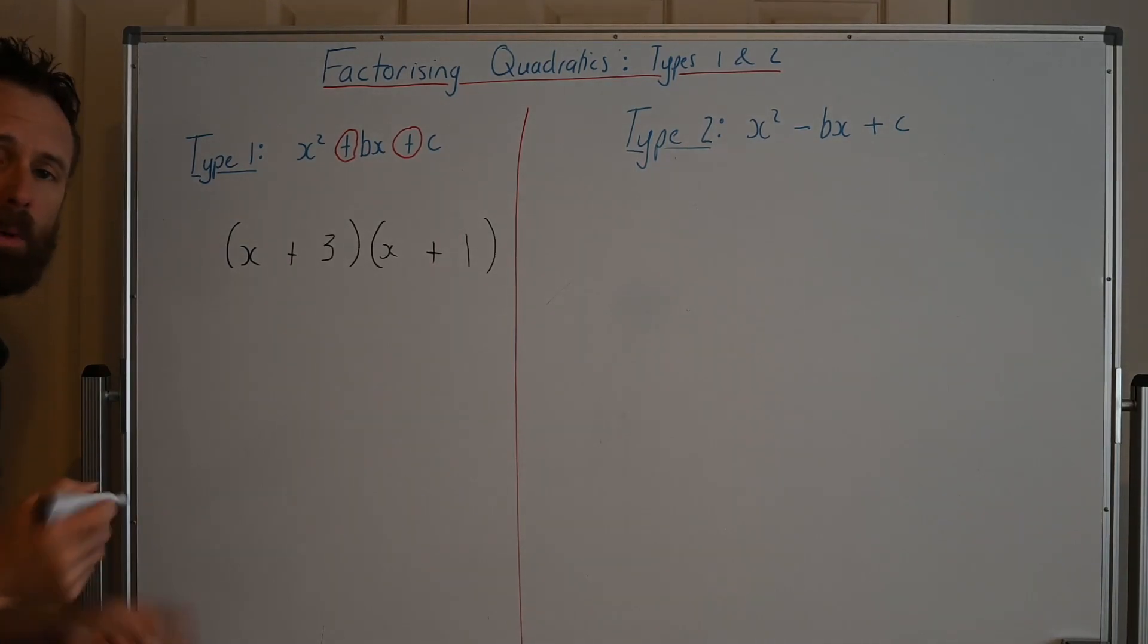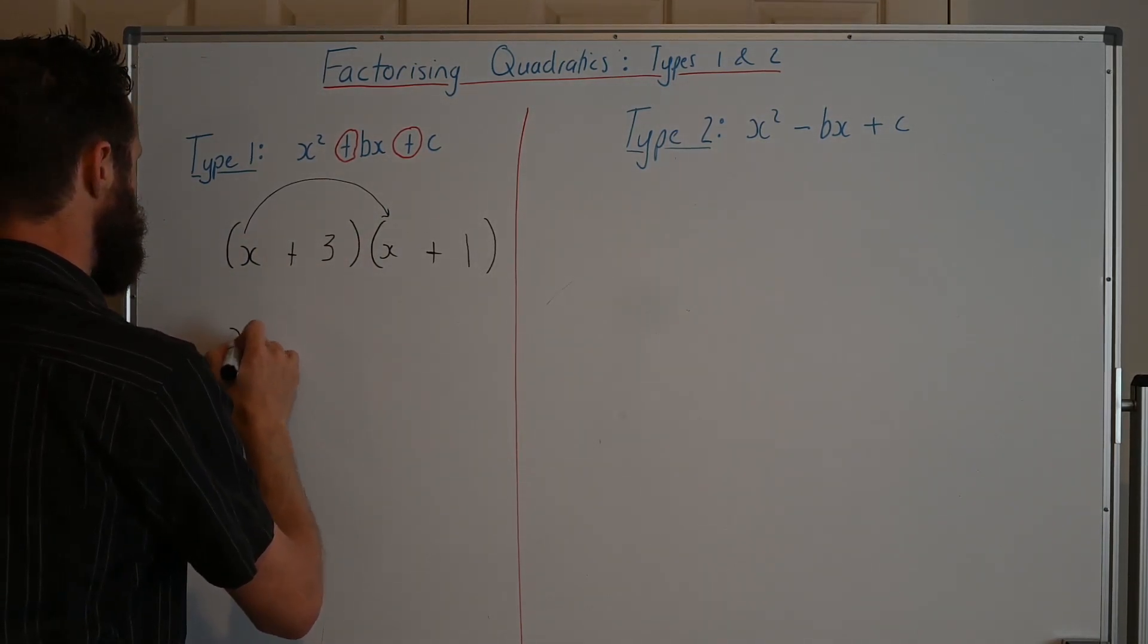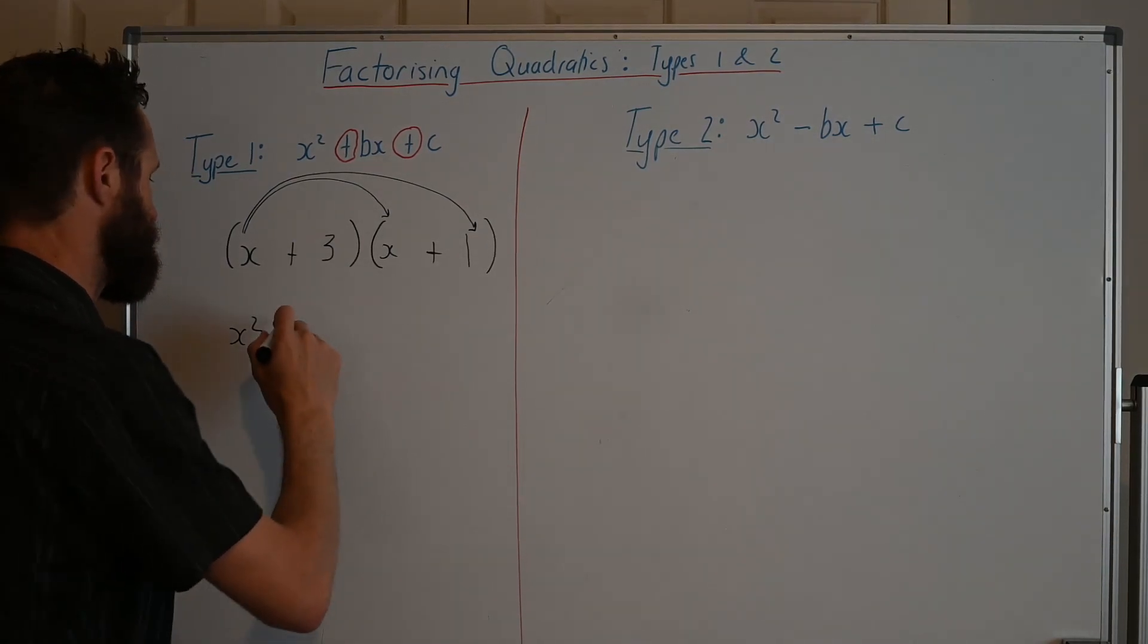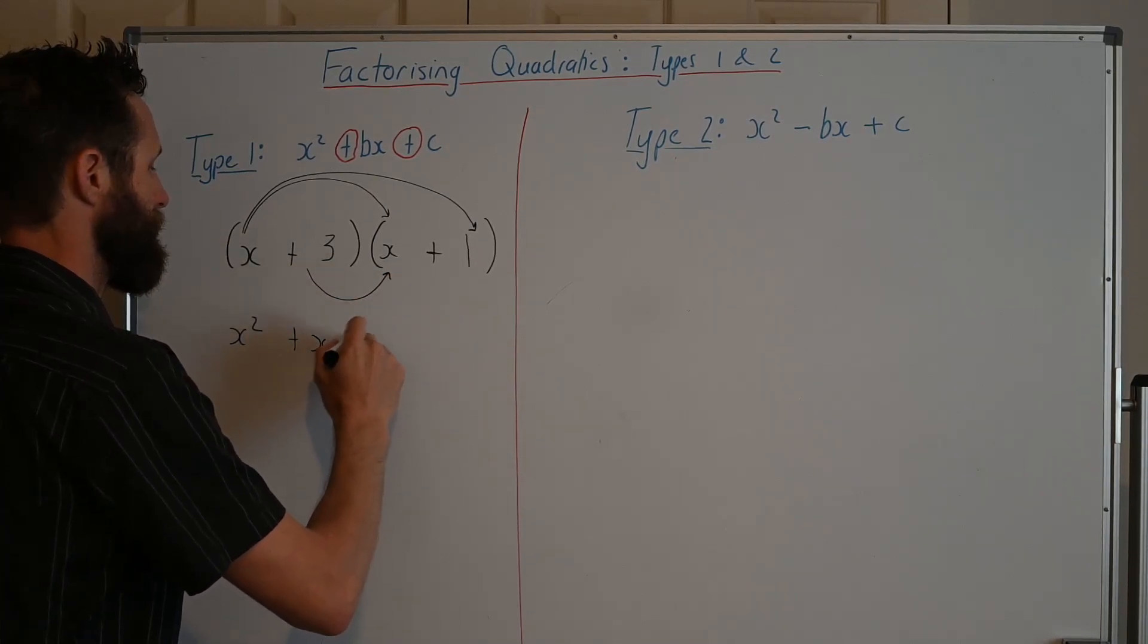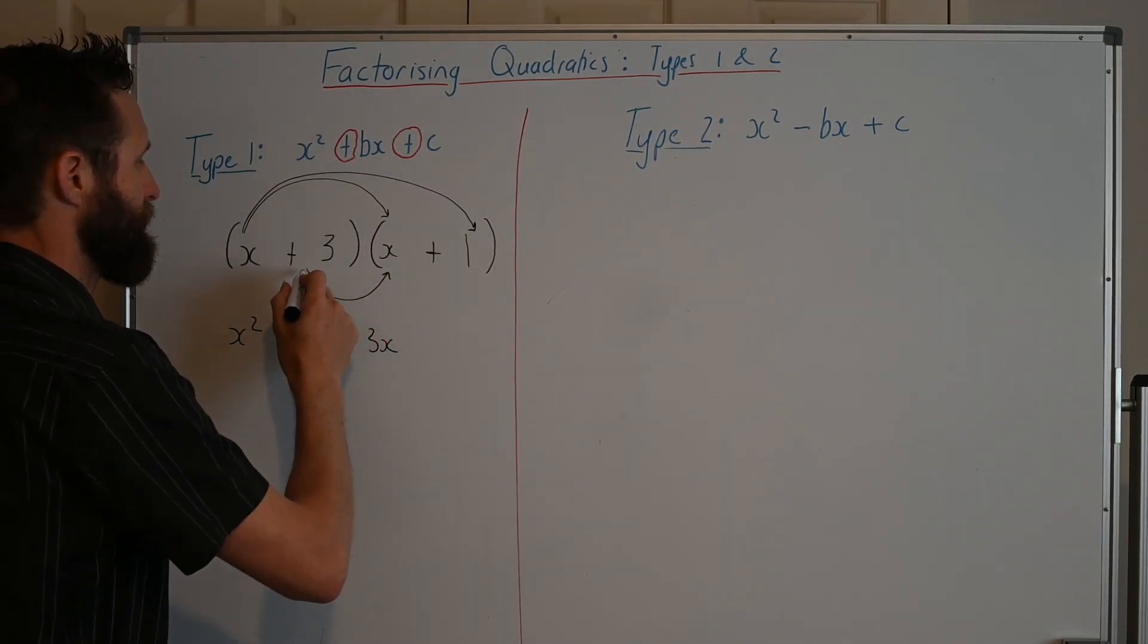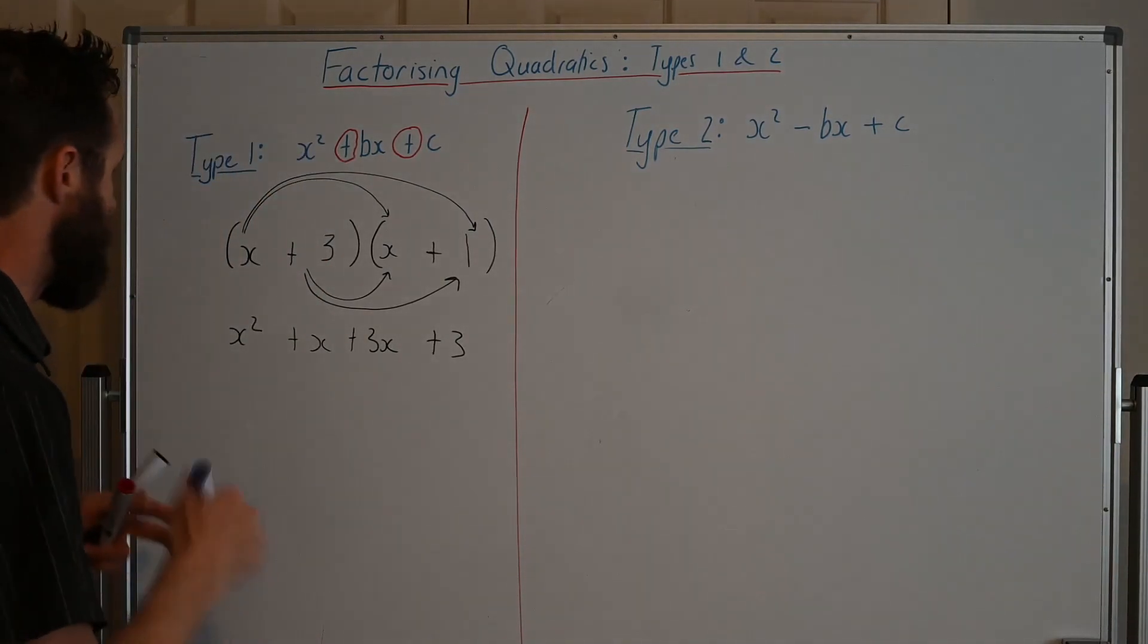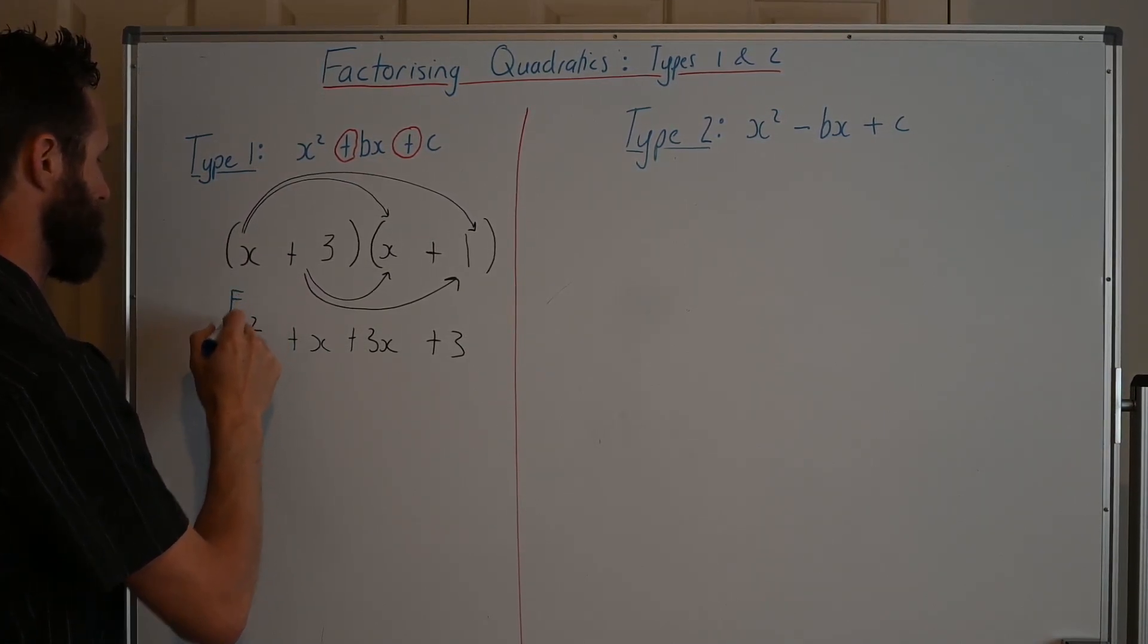Now when we use FOIL on this, we've got F for firsts, and that will give us x². Then we use outers, which will give us x plus x. Then we use inners, which will give us plus 3x. And then we will use lasts, which is the 3 and the 1, which will give us plus 3.